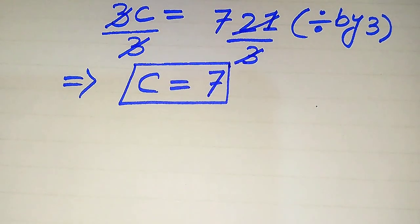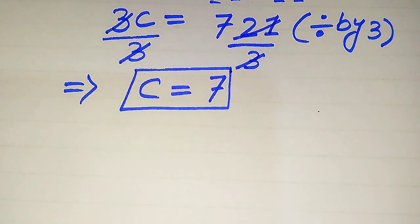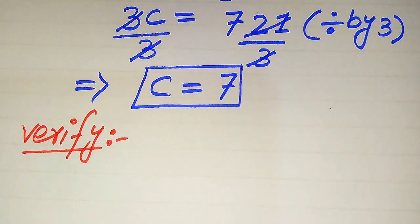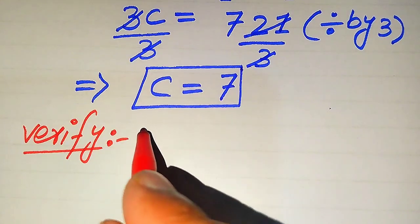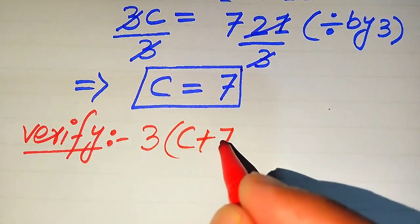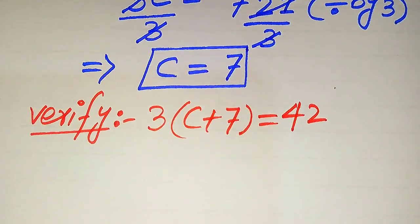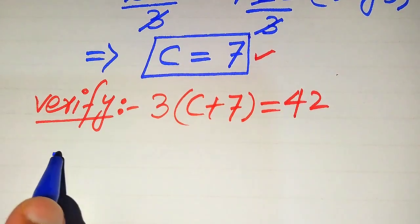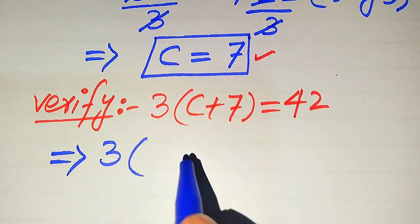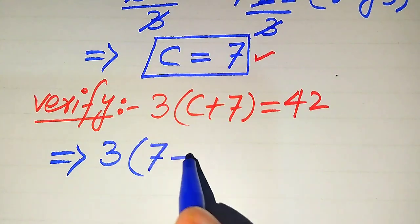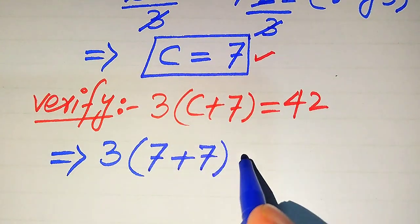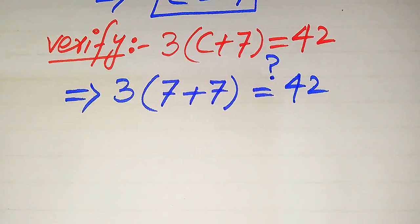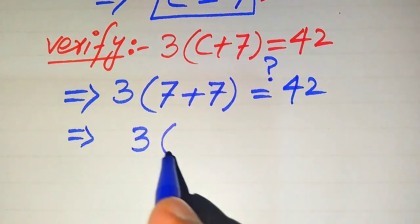From the first method we get only one root: c equals 7. Now we verify whether this root satisfies the given equation or is an extraneous root. We copy down the given equation: 3 times of c plus 7 is equals to 42. We substitute c equals 7 into the left hand side, giving us 3 times of 7 plus 7.